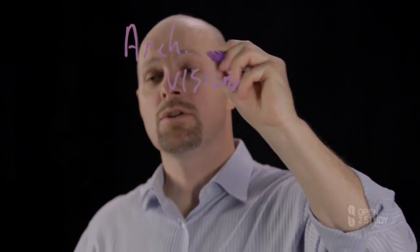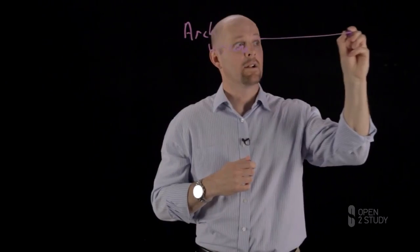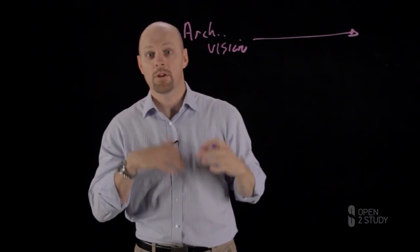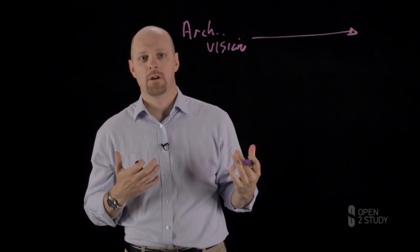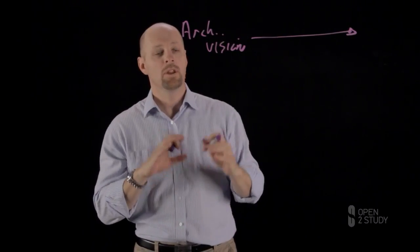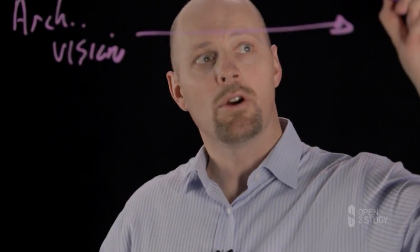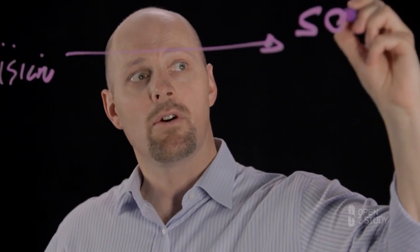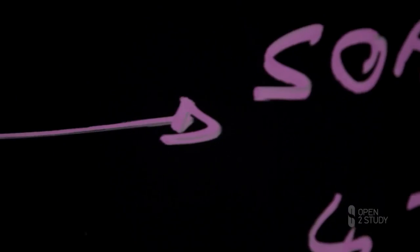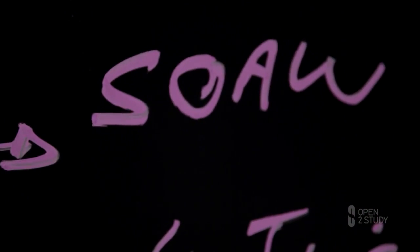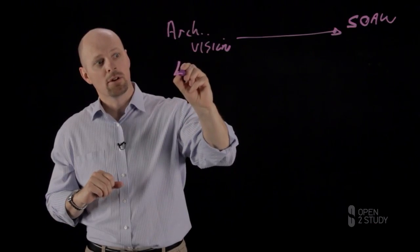That architecture vision document drives out what the organization is looking to achieve through this particular iteration of architecture. When you eventually have clarity on that vision, you document it into what's referred to as a statement of architecture work.